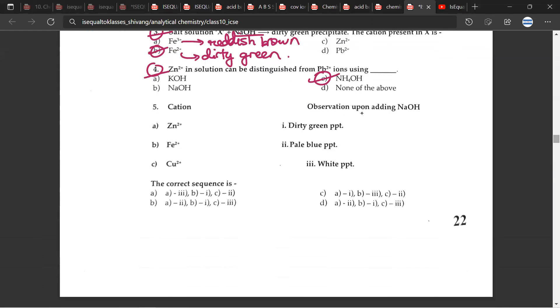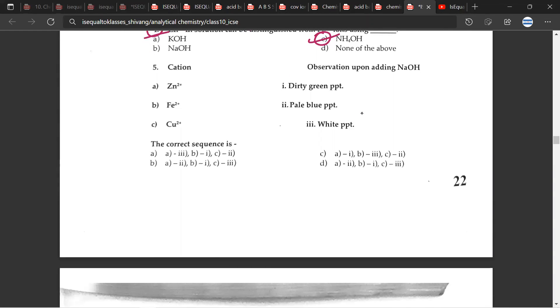Let's scroll down and move on to the next question. Cation observation upon, so this is a match the following. Let's look at the sequence, observe the sequence carefully. And for this, the correct answer would be A. So A would match to third, Zn2+ will be white precipitate, B would be first, Fe2+ would be dirty green. Just remember that Fe2+ would be dirty green precipitate, and Fe3+ would be reddish brown precipitate. Cu2+ would be pale blue precipitate.